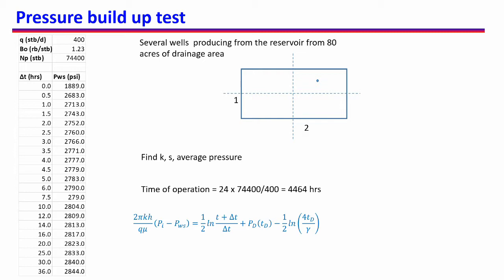Hello everyone. In this video we will continue the problem from the last video. We were given a reservoir developed in a 2-to-1 rectangular pattern where the well is located in the middle of one of the quadrants. The flow rate, Bo at current time, and the total production from the reservoir till today are given. We started a buildup test and want to find the permeability, skin factor, and average pressure around the well.